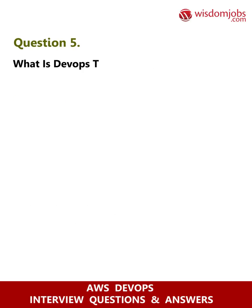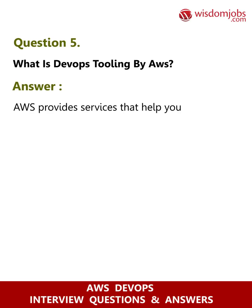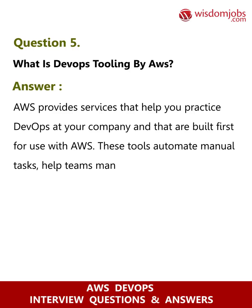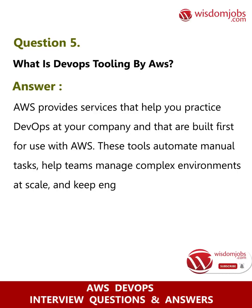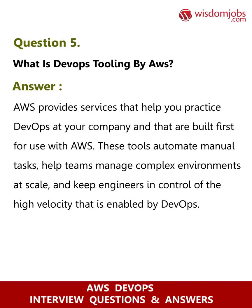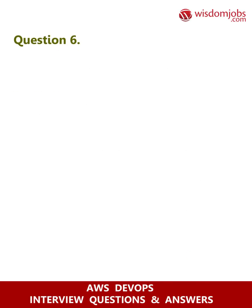Question 5: What is DevOps tooling by AWS? Answer: AWS provides services that help you practice DevOps at your company, built first for use with AWS. These tools automate manual tasks, help teams manage complex environments at scale, and keep engineers in control of the high velocity that is enabled by DevOps.